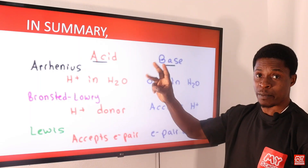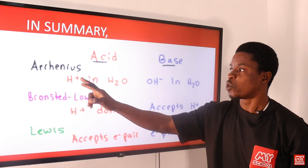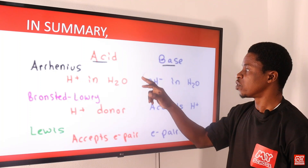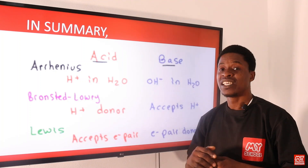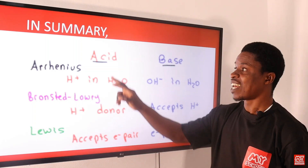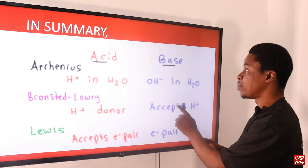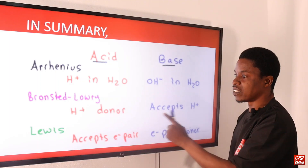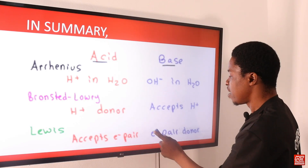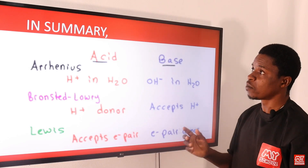To summarize all three theories: Arrhenius defines acids as substances that dissolve in water to produce hydrogen ion, while bases are substances that dissolve in water to produce hydroxide ion as their only negative ion. Brønsted-Lowry defines acids as proton donors and bases as proton acceptors. Lewis defines acids as electron pair acceptors while bases are electron pair donors.